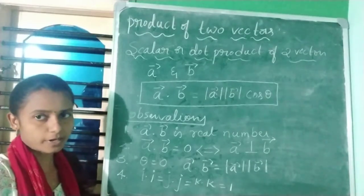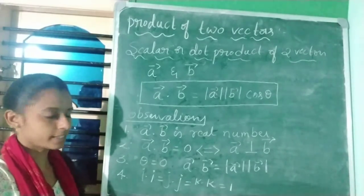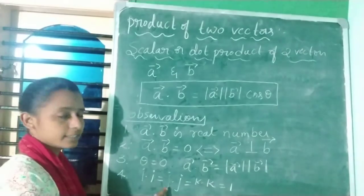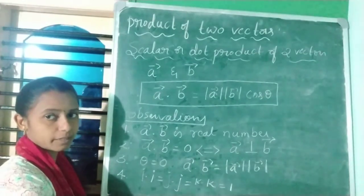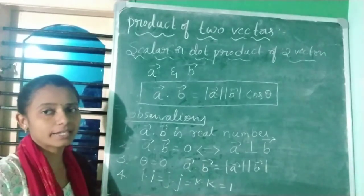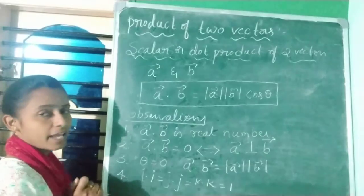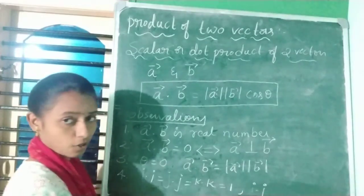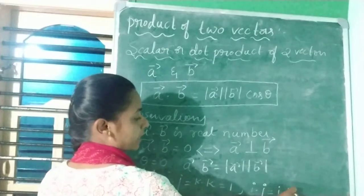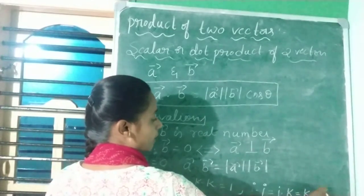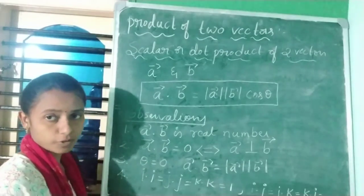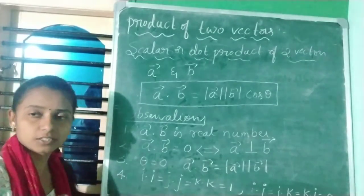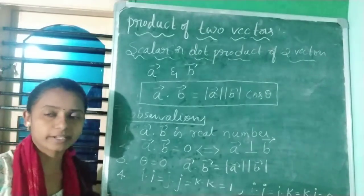When doing a dot product, i·i, j·j, k·k each equal 1, meaning you multiply the coefficients of i, j, k in both vectors. For different components — i·j = j·k = k·i = 0. So same component dot product is 1, and different component dot product is zero.